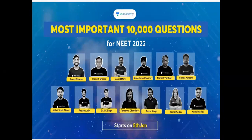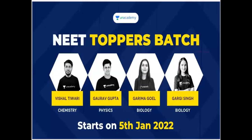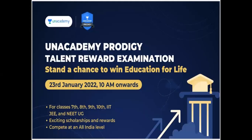Don't forget this chance — do any number of questions to chase that medical seat. NEET toppers batch starts on 5th January 2022, covering biology, physics, chemistry, all three — botany, zoology. An Academy Prodigy talent reward examination: you can stand a chance to win education for life. It is on 23rd January 2022 from 10 a.m. onwards.